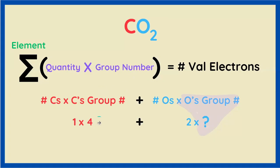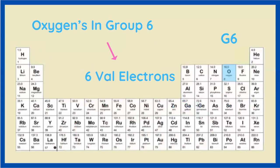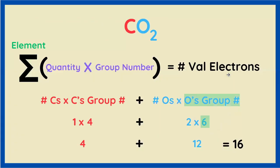There's one carbon, carbon's in group four, one times four, but for oxygen we know that there's two of them, but what's the group number for oxygen? Well, let's go back to the periodic table, and we see that oxygen is in group six. Therefore, each oxygen is going to have six valence electrons, so two oxygens contribute twelve. Four plus twelve equals sixteen valence electrons for CO2.